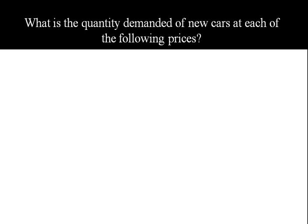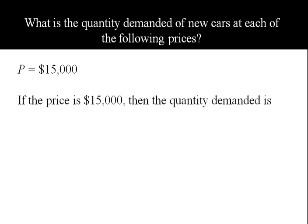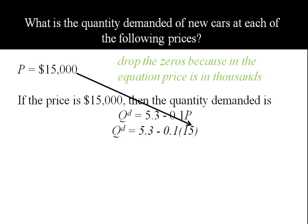What's the quantity demanded of new cars at each of the following prices? Let's suppose that the average price of a new car is $15,000. To find the quantity demanded at that price, we'll take our original equation and plug in the $15,000 for price. But we're actually just going to plug in 15. We're dropping those three zeros because the equation we're given tells us price is already in thousands.